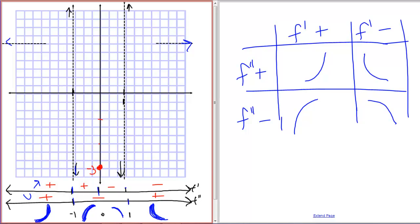Now we play connect the dots with our arcs. All the way on the left, approaching negative infinity, we're approaching y equals 2 and going increasing and concave up toward the asymptote at negative 1, going to positive infinity. From negative 1 to 0, we come from negative infinity, pass through negative 3 at x equals 0, drawing an arc that is increasing but concave down. From 0 to 1, we are decreasing and concave down approaching the asymptote at 1. From 1 to infinity, we connect with a curve that is decreasing and concave up. And there we are — we've sketched our graph.